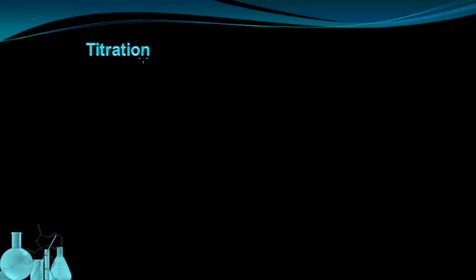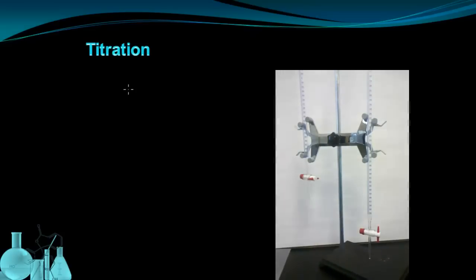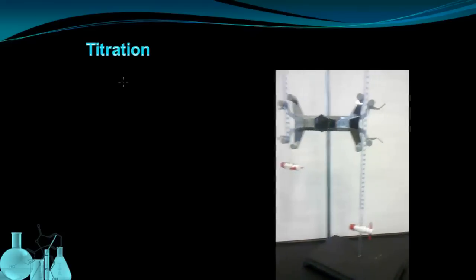The first thing we need to know about performing titration is the equipment that we use. And the most important piece of lab equipment for this is called the burette. Here you can see a burette. You should notice a couple things about this burette. It's a measuring device, so it has gradations all along it.